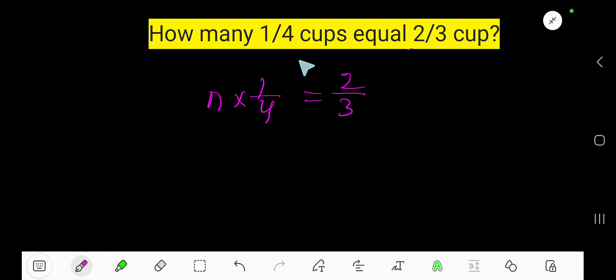How many one fourth cups equals two thirds cup? That is, how many times one fourth cup equals two thirds cup. Let's say n times one fourth cup equals two thirds cup, so find the value of n.